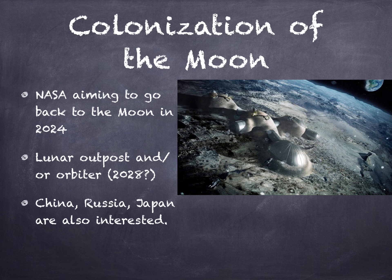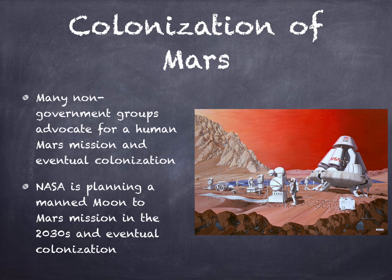There is talk about returning to the Moon — NASA aims to go back in 2024. After that is successful, there would be plans to produce a lunar outpost or orbiter in 2028 or into the 2030s. Other countries are also interested, but the plans for colonization of the Moon are pretty nebulous. Others have been looking at colonizing Mars. A famous failure is Mars One, which was the idea of sending humans on a one-way trip to Mars. It turned out to be a for-profit organization, and lots of people were duped. NASA is looking at a manned mission jumping from the Moon to Mars in the 2030s, and then if successful, eventually colonizing Mars — but this is further into the future.